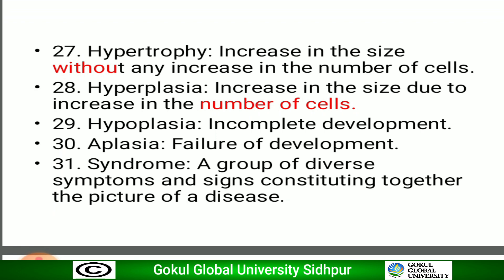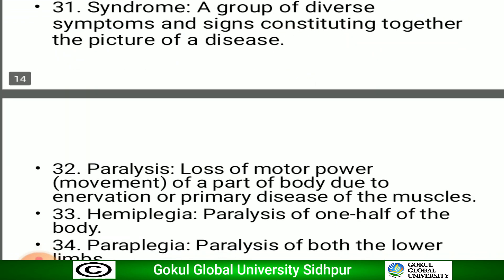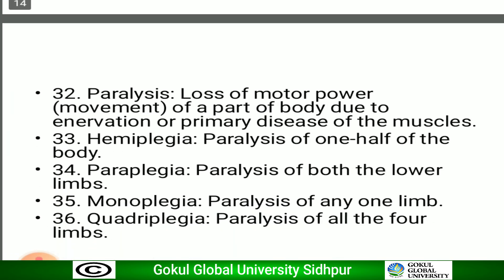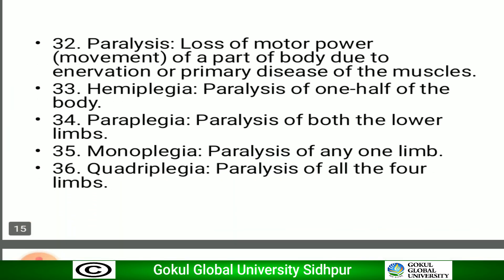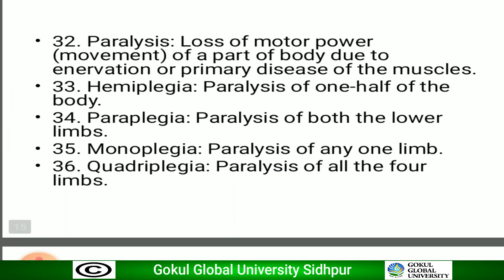Syndrome is a group of diverse symptoms and signs which, considered together, form the picture of a disease. Paralysis is loss of motor power of a part of the body due to nerve supply failure or primary disease of the muscles.